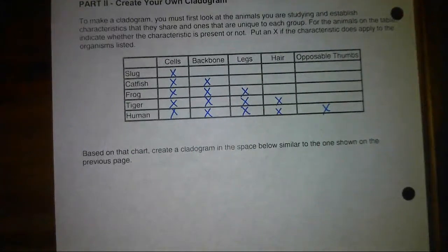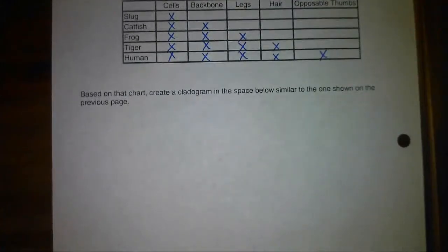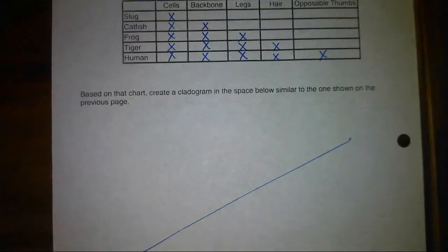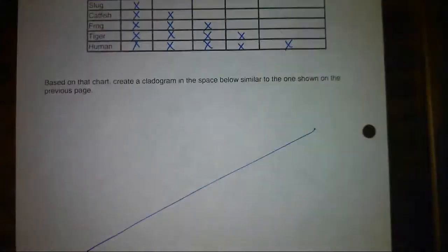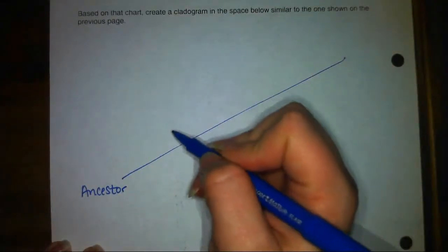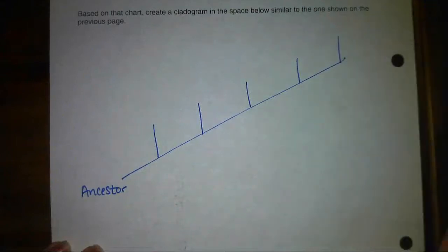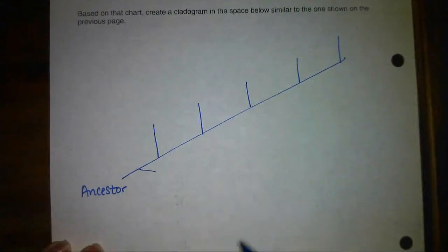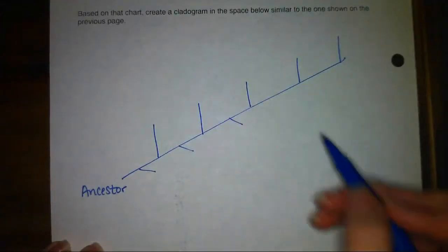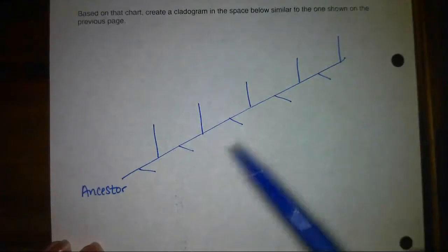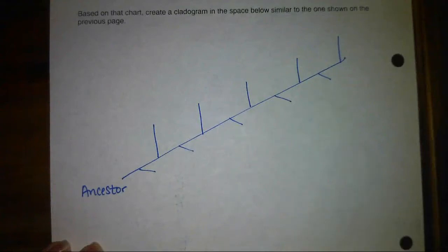To make your cladogram, I'm going to help you set it up and then you'll finish it. Following the general pattern of the one on the front, draw a diagonal line with the common ancestor at the bottom. We have five organisms to place on the cladogram. Think about what organism you might put at the bottom versus near the top. Then place the traits in the order that they appeared, from the trait all organisms share down to the trait that only one organism has.